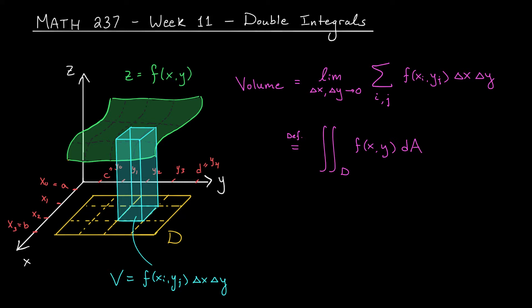Nobody wants to compute a double integral using that gross definition. Instead, we can use what we know about single integrals to help us. Specifically, we can evaluate this double integral by first integrating with respect to one of our variables while holding the other variable constant. Maybe we start with y, giving the integral from c to d of f of xy dy, where we treat x's like constants.